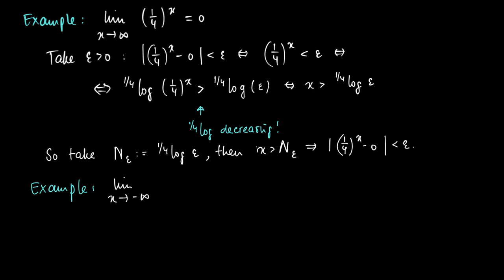Another example. I will show you that the limit as x approaches minus infinity of 1/x² equals 0. Well, take again an epsilon larger than 0. Then what we need to show is that for x small enough, |1/x² - 0| is smaller than epsilon.